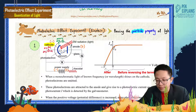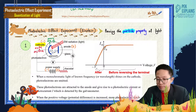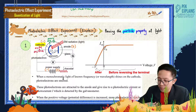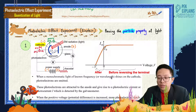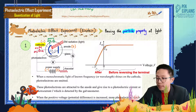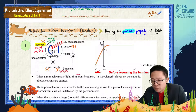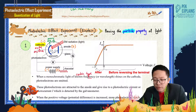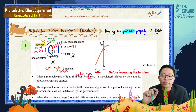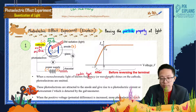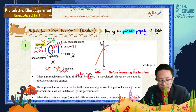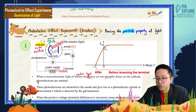The incident light is incident on the cathode. When monochromatic light of known frequency or wavelength — meaning a certain type of light, whether it's microwave, ultraviolet, visible, red, violet, or blue light — shines on the cathode, photoelectrons are emitted.